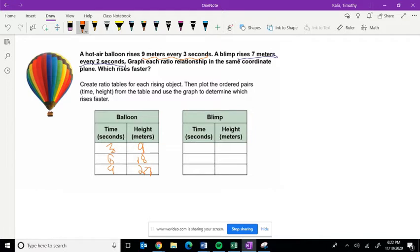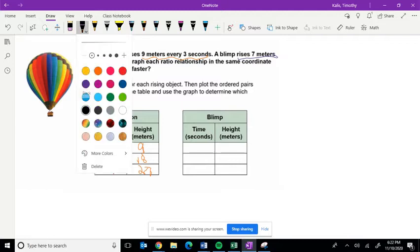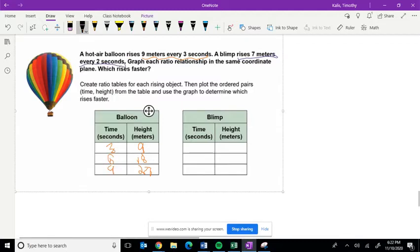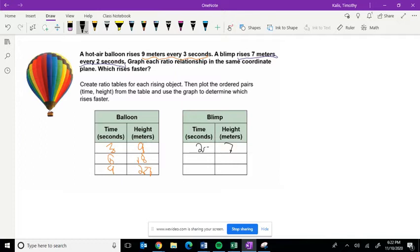For the blimp, we know that the blimp rises 7 meters every 2 seconds. So 2 seconds, 7 meters. 4 seconds would have to be 14 meters. And 6 seconds would be 21 meters.